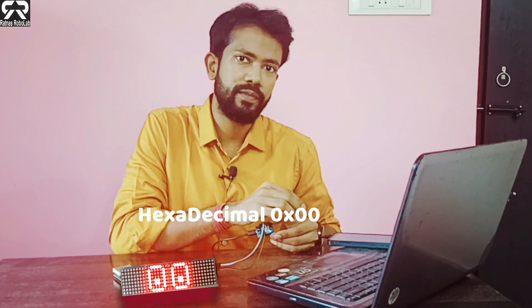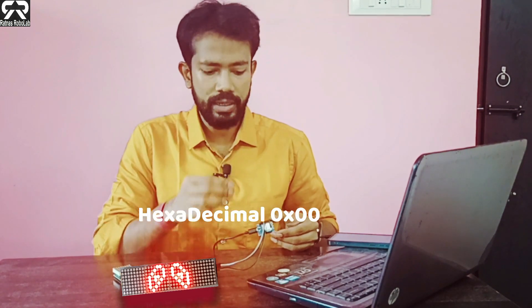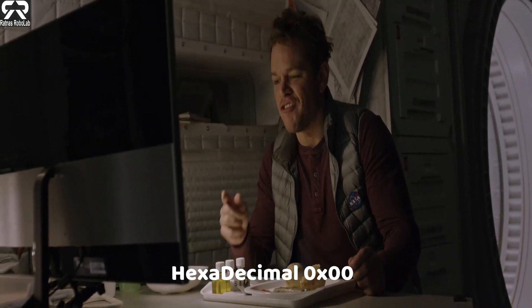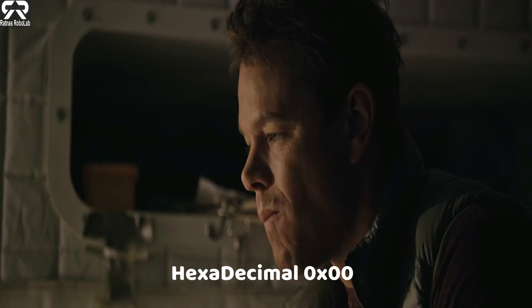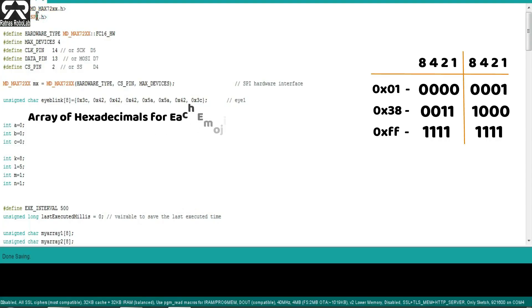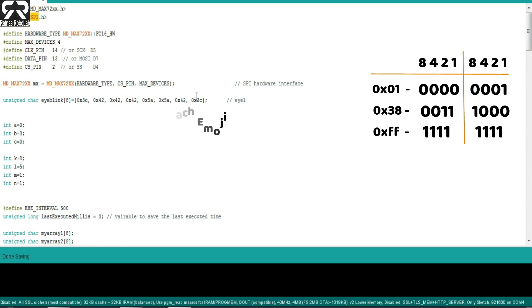At first, the hexadecimal files come to the microcontroller, then to the peripheral part — meaning the LED display. These are the header files, and I created all these arrays of hexadecimal values for each emoji. Let it be simple.